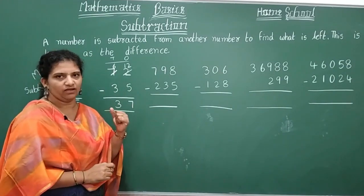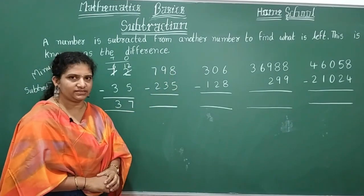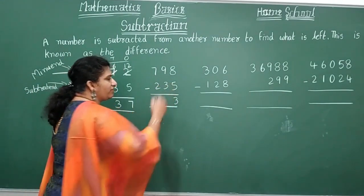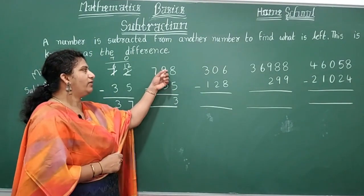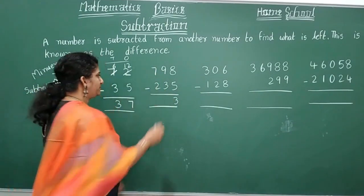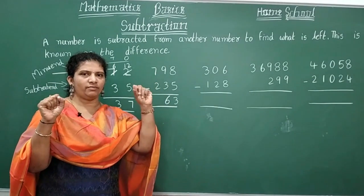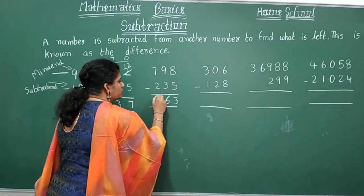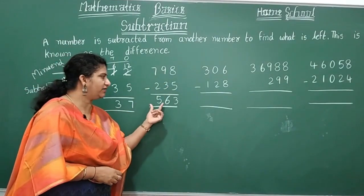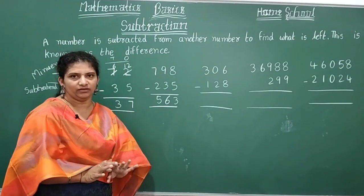Next problem: subtract 235 from 798. In the ones place: eight minus five equals three. In the tens place: nine minus three equals six. In the hundreds place: seven minus two equals five. The difference is 563. No borrowing was needed here.